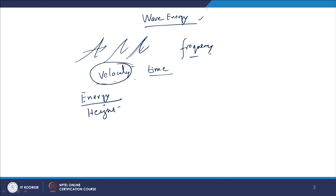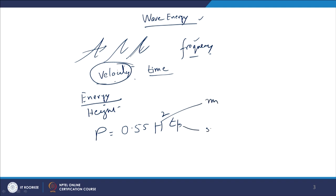The power from a wave varies with amplitude and frequency. There is an empirical relation: Power = 0.55 × H² × Tp, where H is the nominal height of the wave in meters, Tp is the time period in seconds, and power is in kilowatts. This gives us a rough idea of how much power will be developed by a wave.